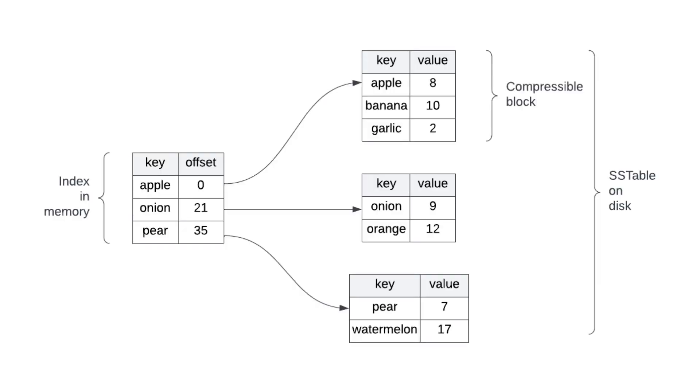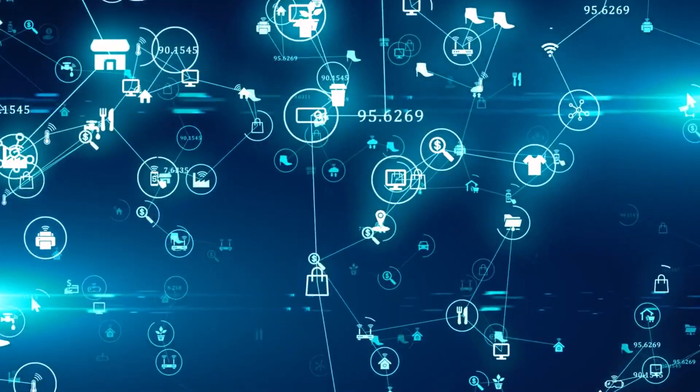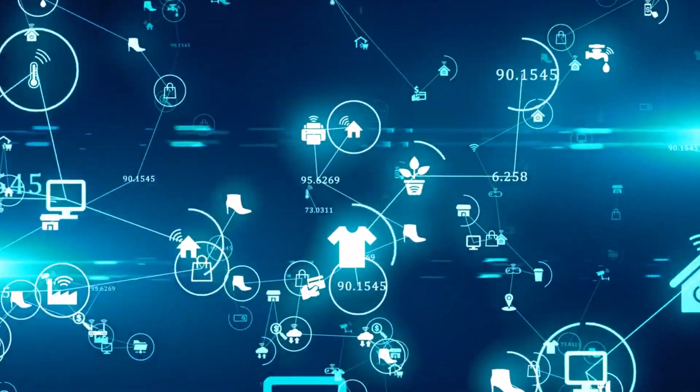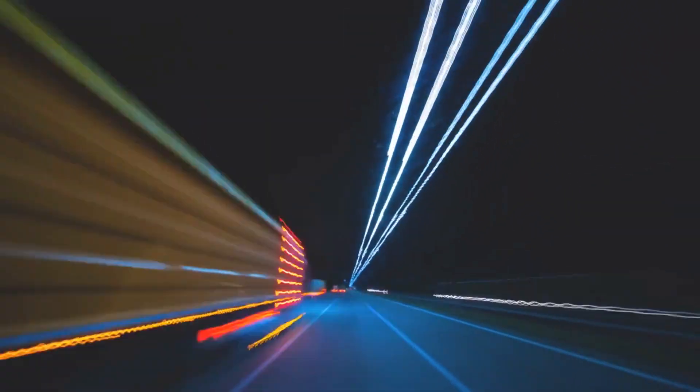Next up, we have the SS table, an elegant solution also known as the sorted string table. SS tables find their home in systems like Apache Cassandra, offering a sorted key-value store residing on disk. With multiple levels and efficient range queries, SS tables deliver exceptional read performance, making them a go-to choice for various applications.